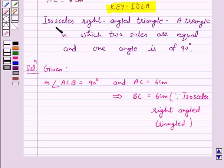We know that in an isosceles right-angled triangle, two sides are equal and one angle is 90 degrees.